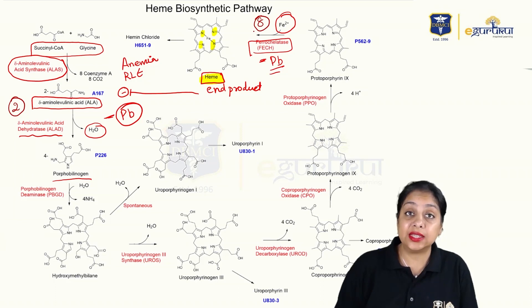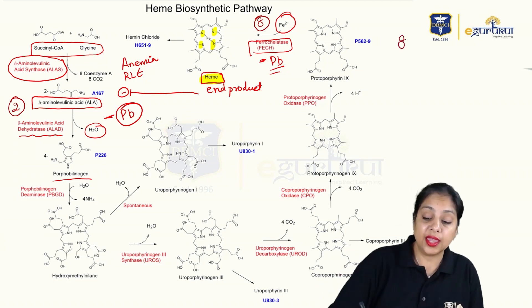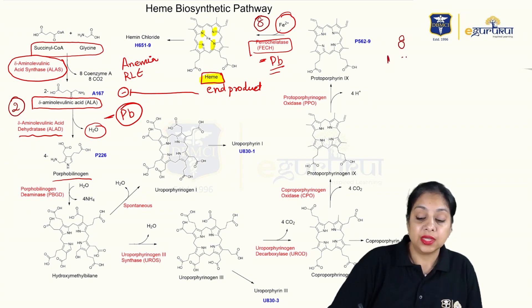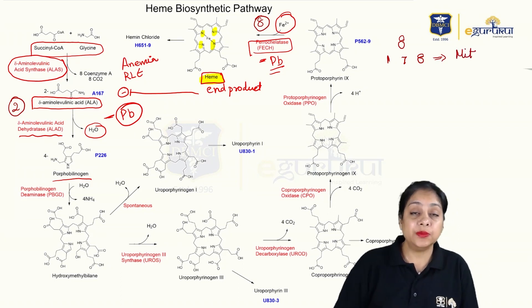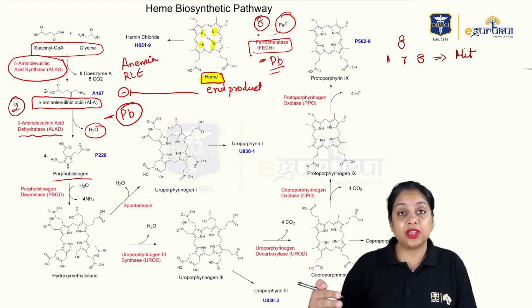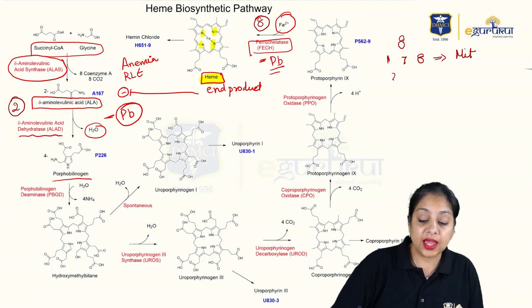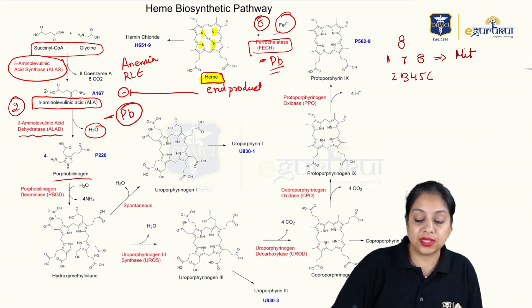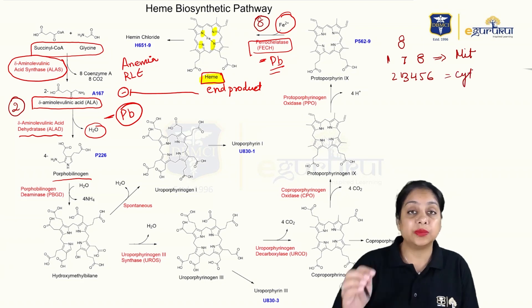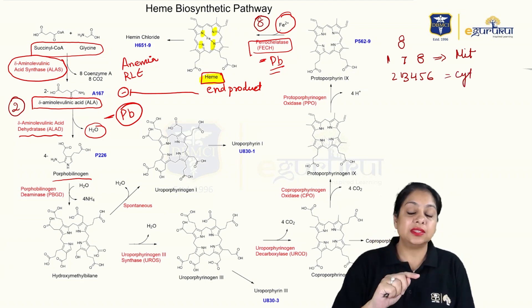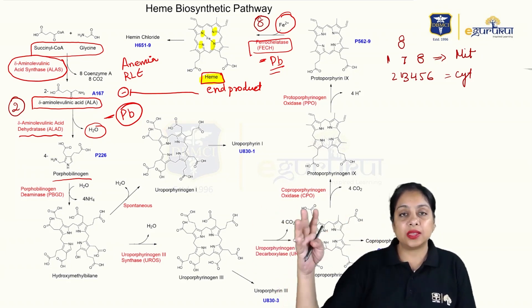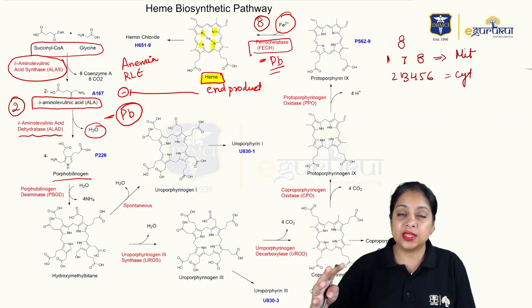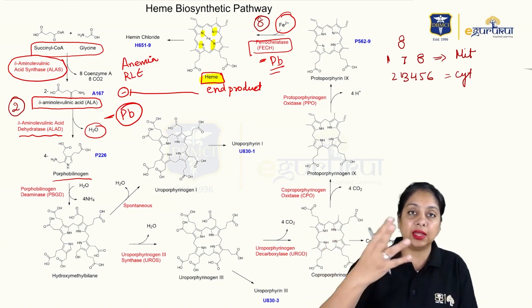There are total eight steps in heme biosynthesis. The first step, seventh step, and eighth step take place in the mitochondria — so the enzymes ALA synthase, ALA dehydratase, and ferrochelatase are mitochondrial enzymes. The rest — steps two through six — are cytoplasmic enzymes. You can imagine the process starting in mitochondria, going out to the cytoplasm, and then coming back in to finally convert to heme.